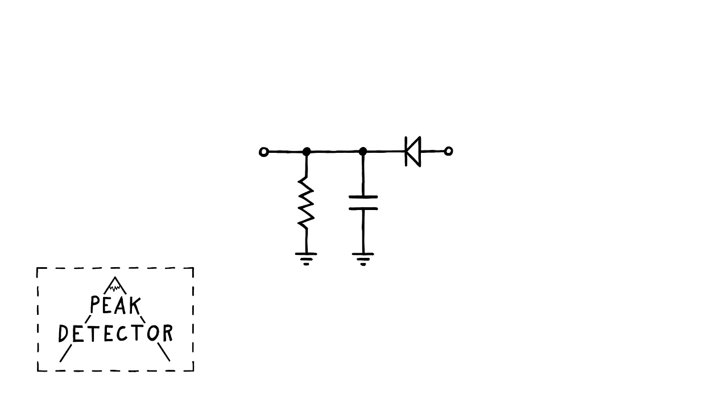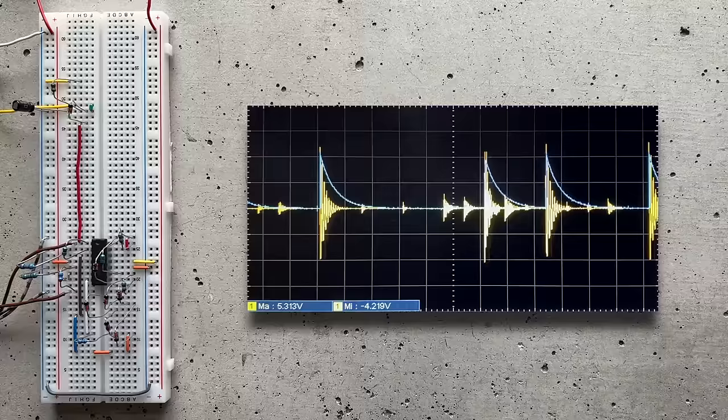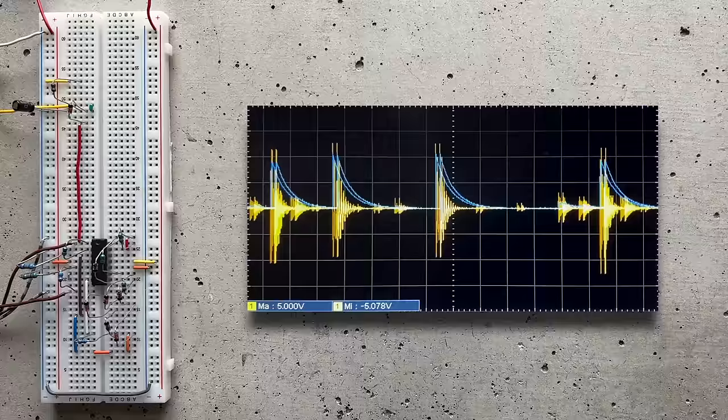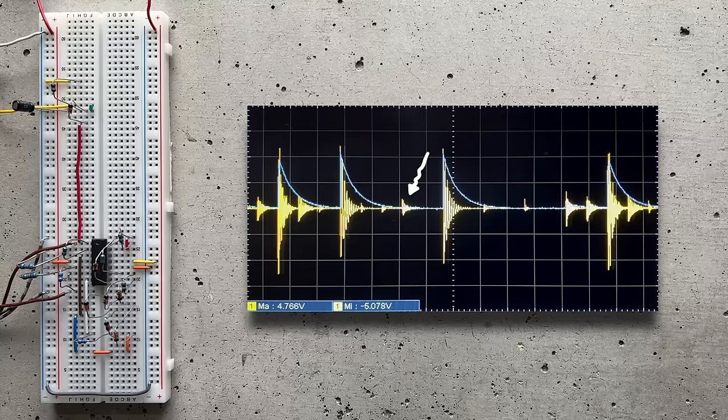For this to work properly, we'll need to find the right values for both the cap and resistor though. If they're very small, the time interval we're looking at will be very short, and vice versa. In my experiments, combining a 10k resistor with a 10 µF capacitor gave me the best results. To demo this, I've set up the peak detector up here, and I'm feeding it our VCA's output. On the oscilloscope, you can see the input signal in yellow and the peak detector's output in blue. Unfortunately, it's not quite working as expected.